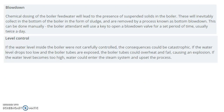Next is level control. If the water level inside the boiler were not carefully controlled, the consequences could be catastrophic. If the water level drops too low and the boiler tubes are exposed, the boiler tubes could overheat and fail, causing an explosion. If the water level becomes too high, water could enter the steam system and upset the process.